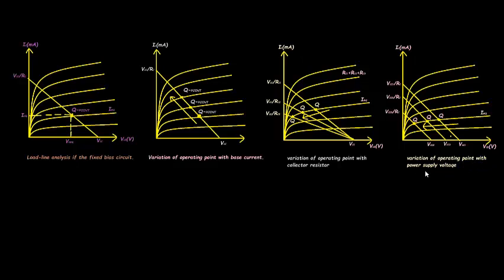Coming to the next one — variation of operating point with power supply voltage. I varied VCC with three values: VCC1, VCC2, and VCC3, keeping the collector resistor constant. The axes are VCE and VCC divided by RC. Thank you for watching.